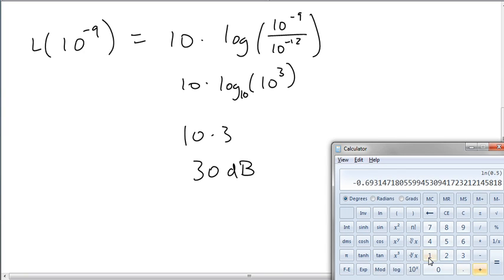We could have typed in 10 times, we want parentheses, 10 raised to the negative 9 divided by 10 raised to the negative 12, close parentheses. We hit the log button, equals, and we get our 30 decibels. So we can do it with the calculator, and we can do this one by hand. But that's how we find, that's one of the logarithmic models that we can use, and we can use a calculator to evaluate.